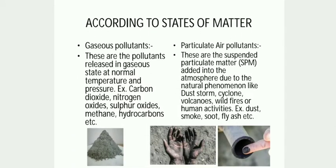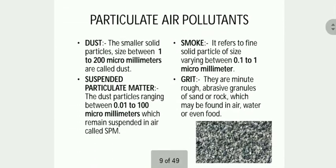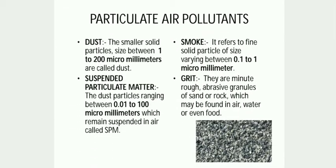According to the state of matter, air pollutants can be of two types: gaseous air pollutants and particulate air pollutants. Particulate air pollutants can be of different types depending upon particle size. For example, dust particles have a size between 1 to 200 micrometres.